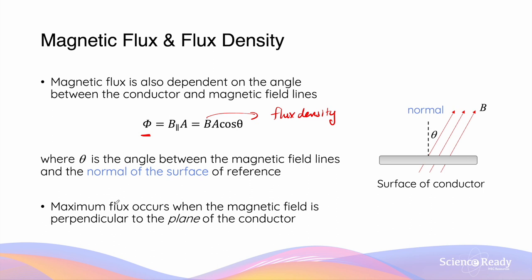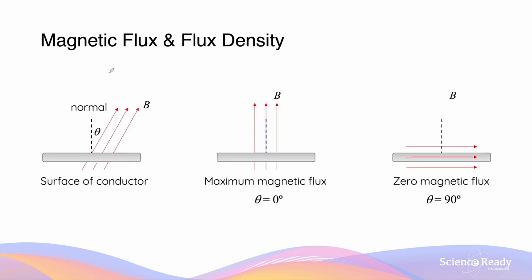Maximum flux passing through a given area will occur when the magnetic field lines are perpendicular to the plane of the conductor. The angle theta in the equation Phi equals BA cosine theta refers to the angle between the direction of the magnetic field and the normal drawn from the plane of the conductor. If the field lines are parallel to the normal, theta will be zero, and cosine zero degrees gives a maximum value of one for the cosine function.